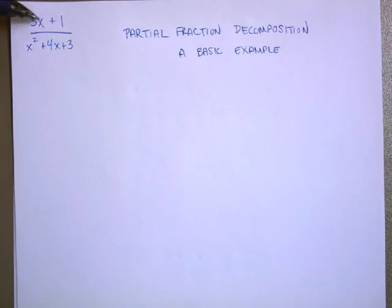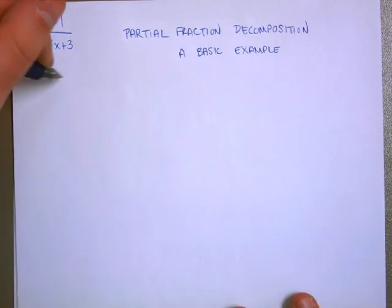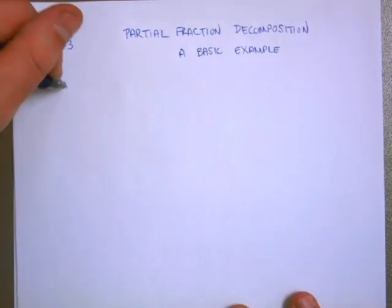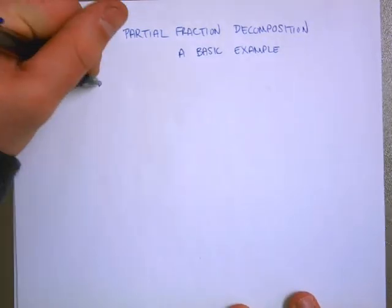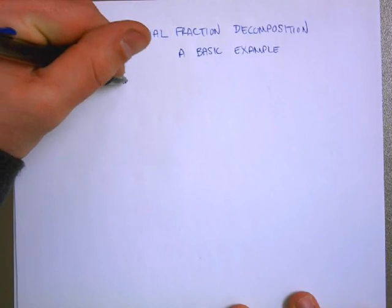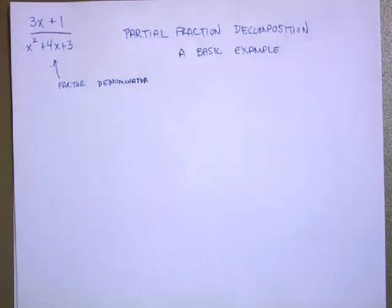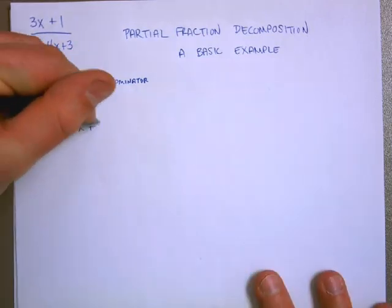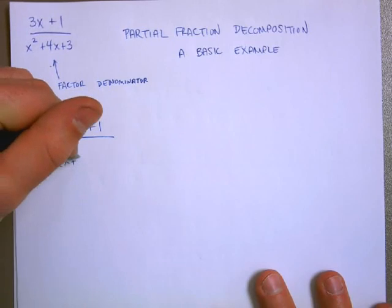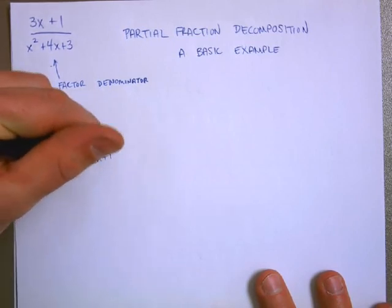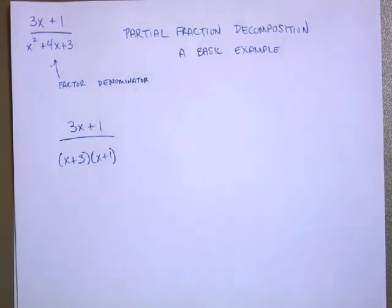I have a power of x over a power of x, x to the first over x to the second power. And I want to rewrite this. Step 1 is I always need to factor the denominator. So x squared plus 4x plus 3, I can rewrite then as (x+3)(x+1). That's my first step.